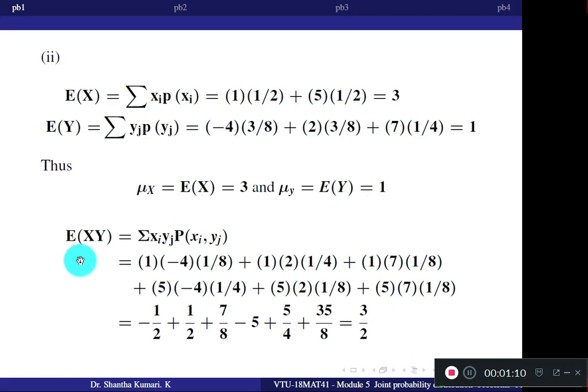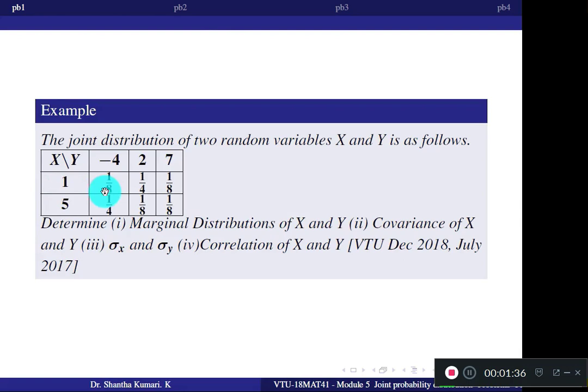Now for E[XY], we use both variables X and Y, so we need the joint distribution table. We compute the summation of xi × yj × P(xi, yj). X values are selected from the row, Y values from the column, and P(X,Y) is the probability at the corresponding intersection. When X=1 and Y=minus 4, P(X,Y)=1/8, so the first term is 1×(minus 4)×(1/8).